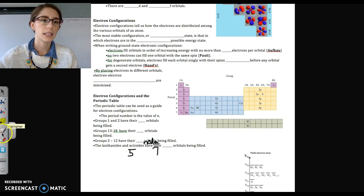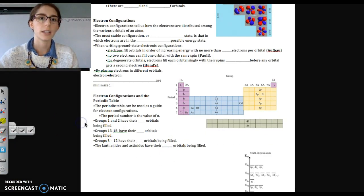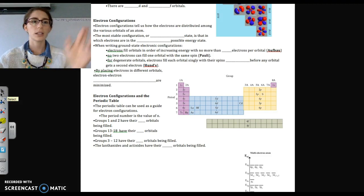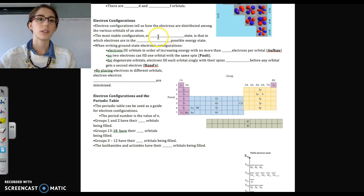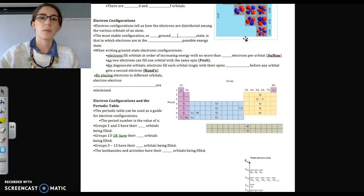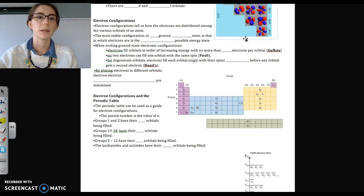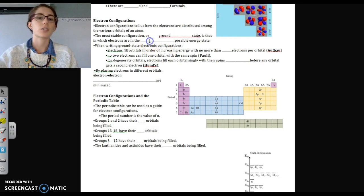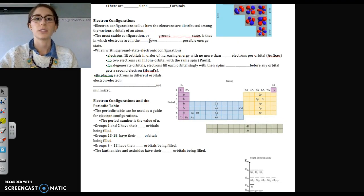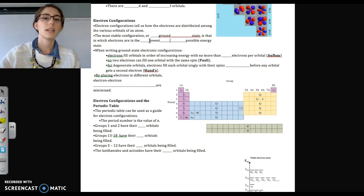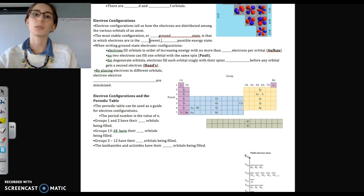And last but not least for today, electron configurations. So electron configurations are actually telling us how the electrons in an atom are distributed among the various energy levels and subshells and orbitals. Okay, the most stable configurations or the ground state, and remember that matches the terminology we talked about earlier, is that in which electrons are at the lowest possible energy. Remember in chemistry, things like to be at the lowest energy state possible. We'll talk about that a lot in our next chapter, which is bonding.